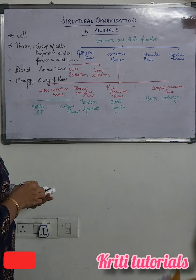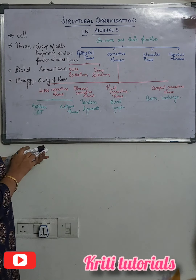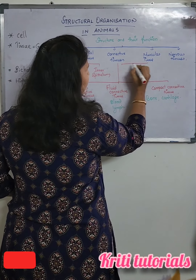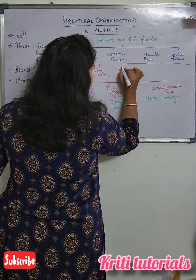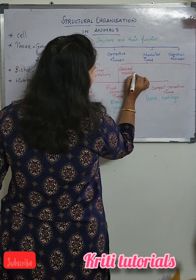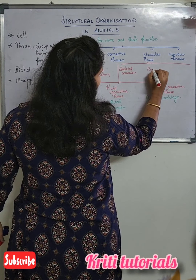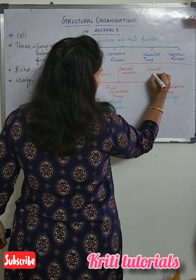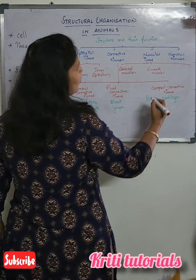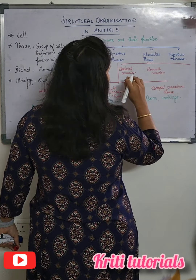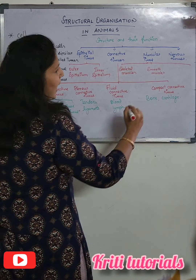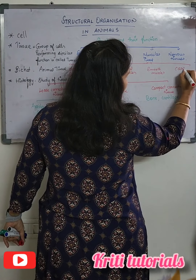Coming to muscular tissues, they are classified into three types. The first one is skeletal muscles, the second one is smooth muscles, and the third one is cardiac muscle.